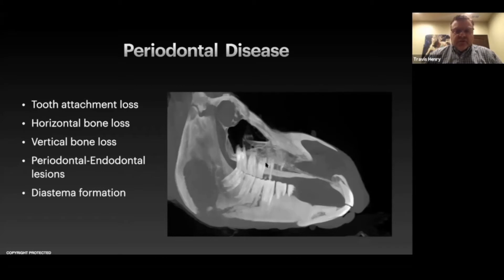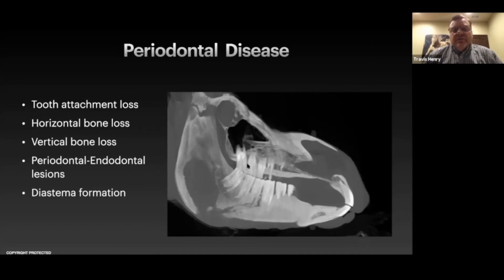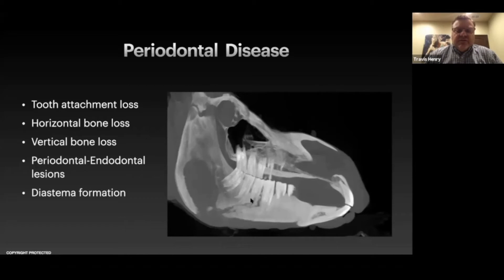In the periodontal ligament, we're going to be looking at the width — an increase in periodontal ligament width can be related to periodontal disease. Horizontal bone loss is when we see the bone dropping away from a tooth in a horizontal fashion. Deep pocketing between teeth is often a vertical bone loss, or we can have combinations of that. And if we have a very deep periodontal infection that travels down alongside a tooth and infects around the apex, that's a perioendo lesion.